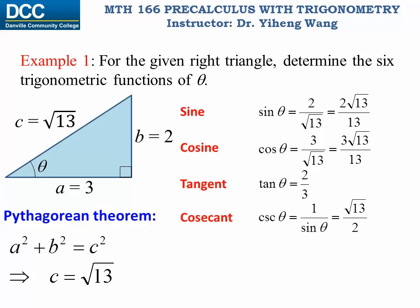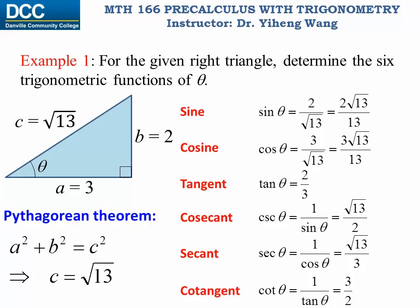Cosecant theta is the reciprocal of sine theta, therefore we take the value we already calculated for sine theta, find the reciprocal, and that is the square root of 13 over two. Secant theta is the reciprocal of cosine theta, therefore that equals square root of 13 over three. And lastly, cotangent theta is the reciprocal of tangent theta, therefore cotangent theta is three over two.